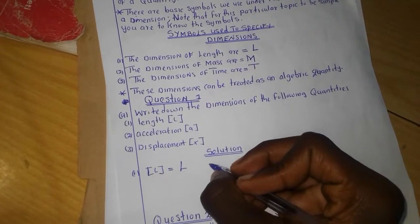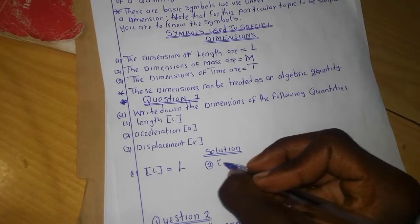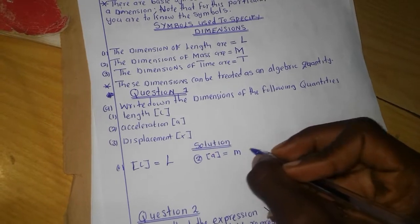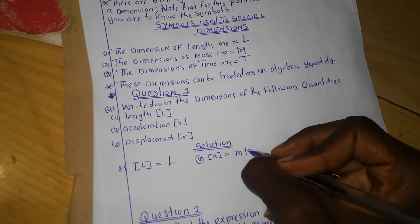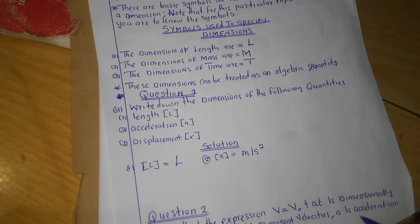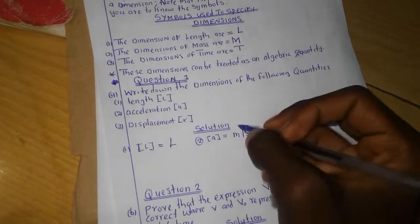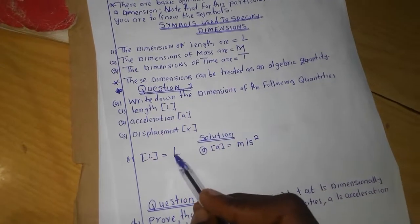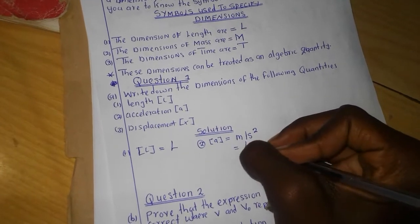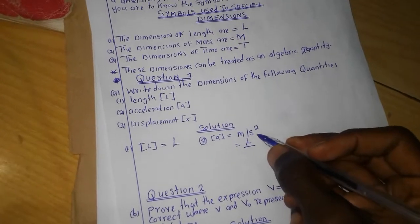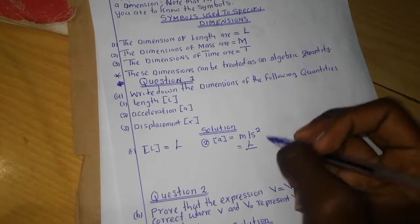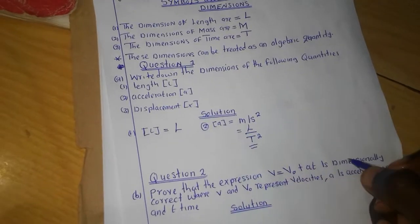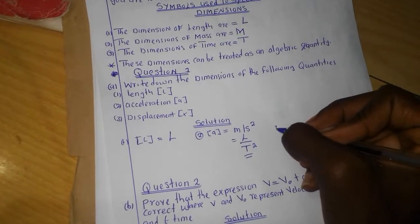We come to the dimensions of acceleration. Since we know that acceleration is simply meters per second squared, we can write it as L over T squared. Meters simply signify big letter L, and seconds signify big letter T. Therefore, L over T squared happens to be the dimensions of acceleration.